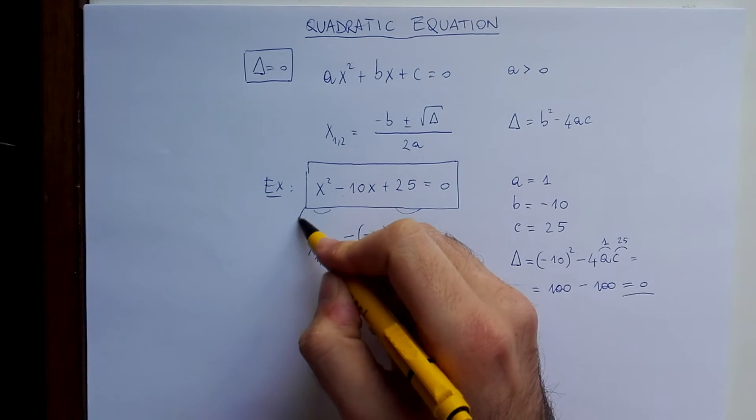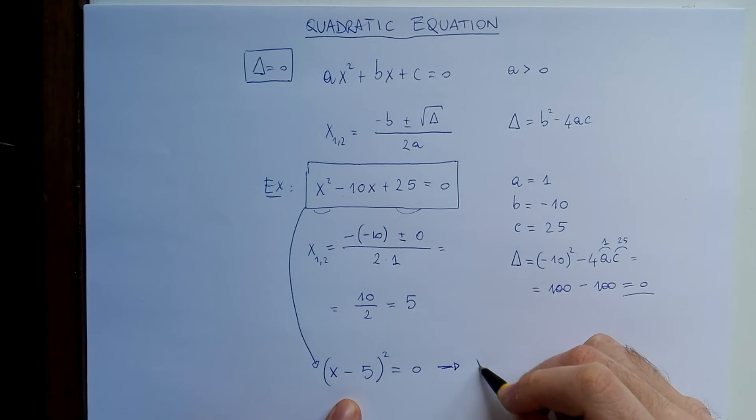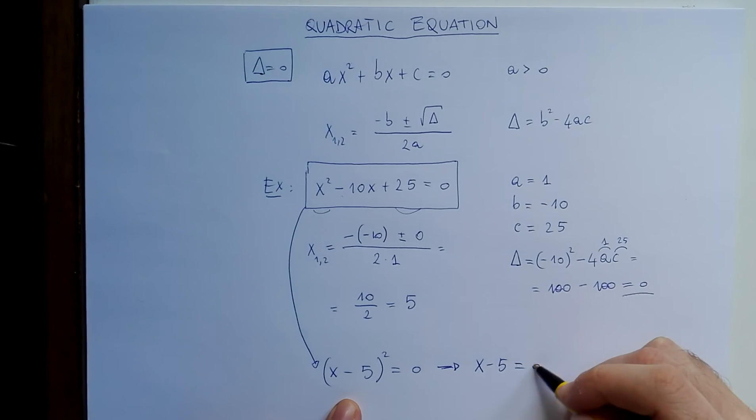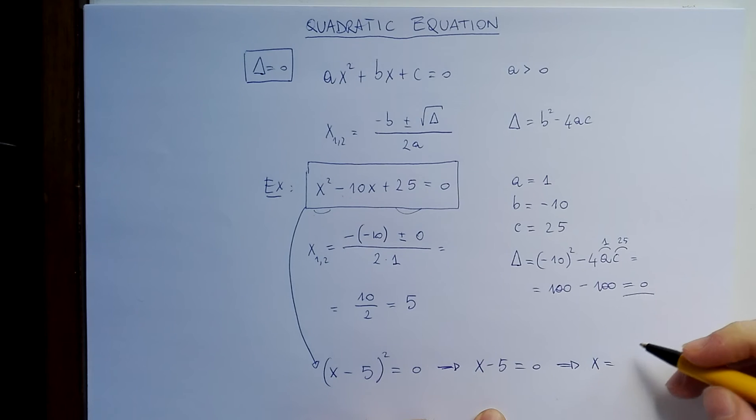So actually this equation is x minus 5 squared equals zero. If you compute here the square, you get the same result as here. If we have a square equal zero, this implies that the base is zero. This is a linear equation, so we have that the solution is given by bringing the 5 to the right-hand side of the equation.